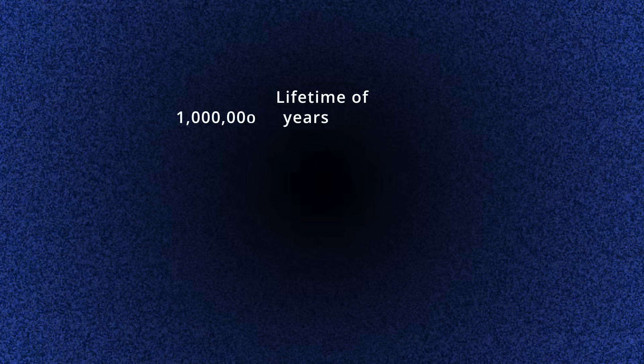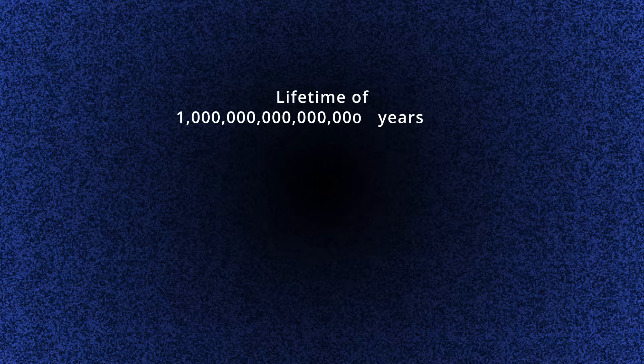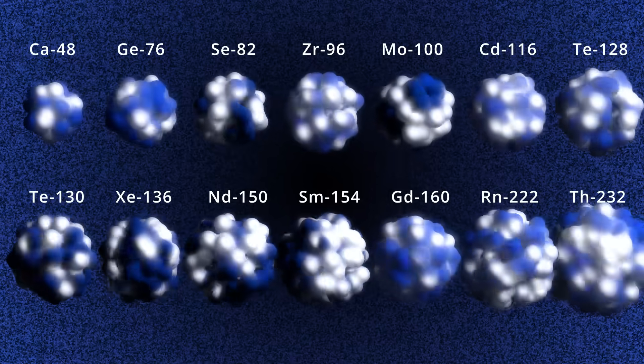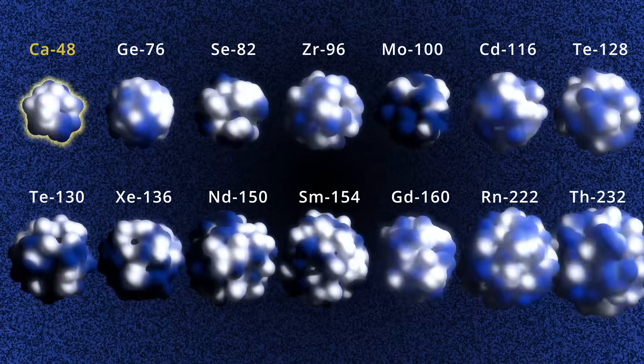Double beta decay is the rarest known kind of radioactive decay, with a lifetime of more than 10 to the power of 18 years. To date, it has been observed in 14 nuclei, the lightest being calcium-48.